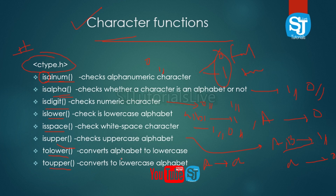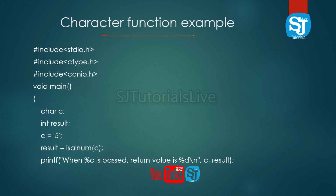Next, we will look at the character function. The character function — for example, c equals '5'. The number of single-character codes is the character. '5' is treated as a character.